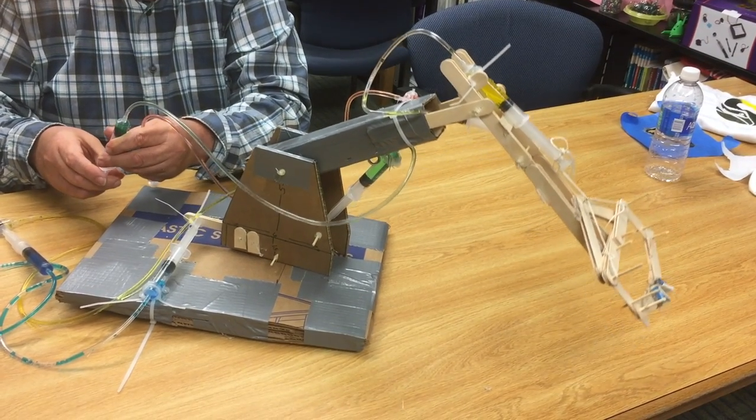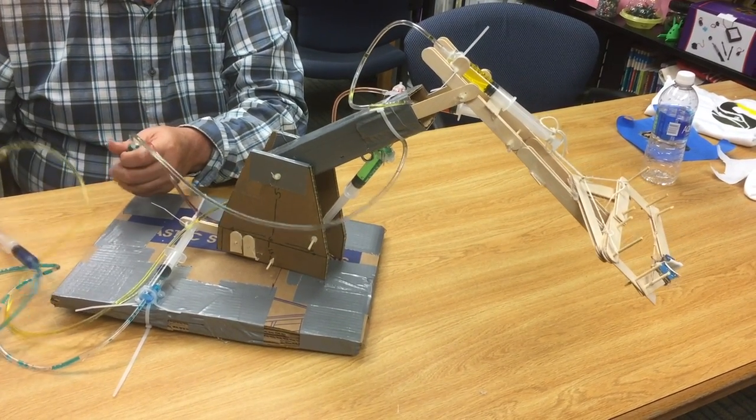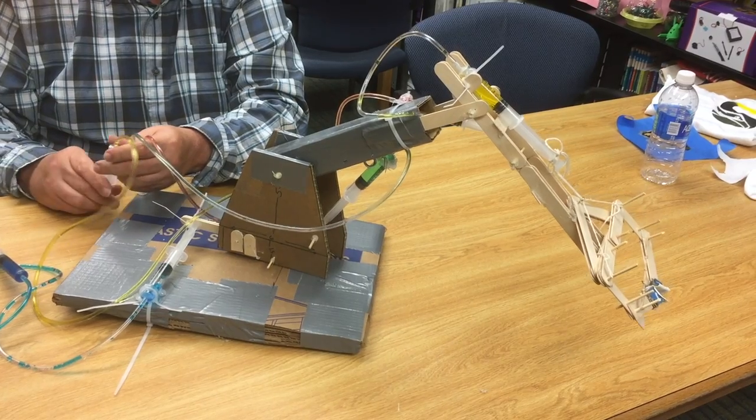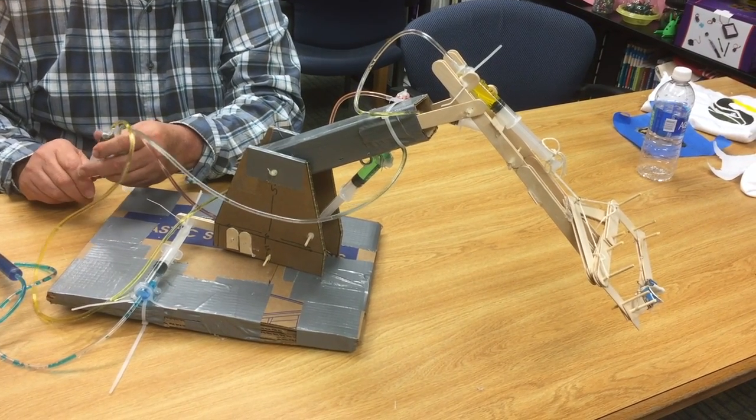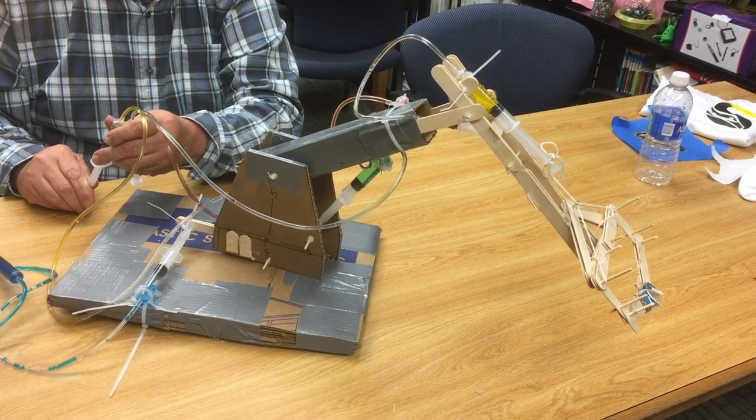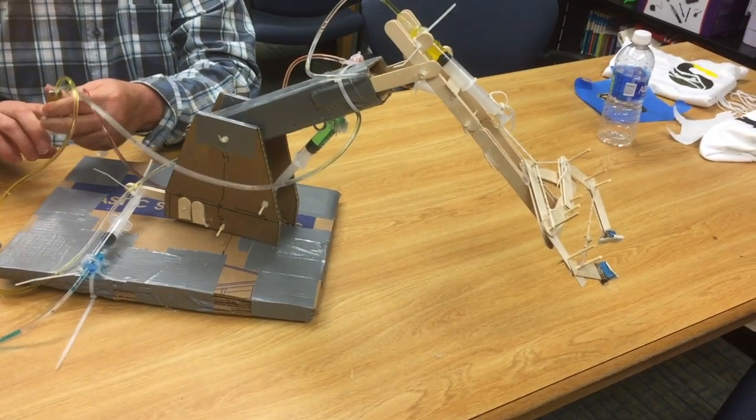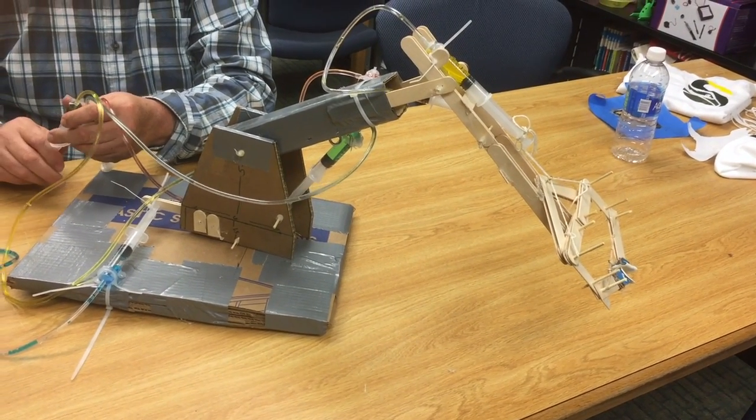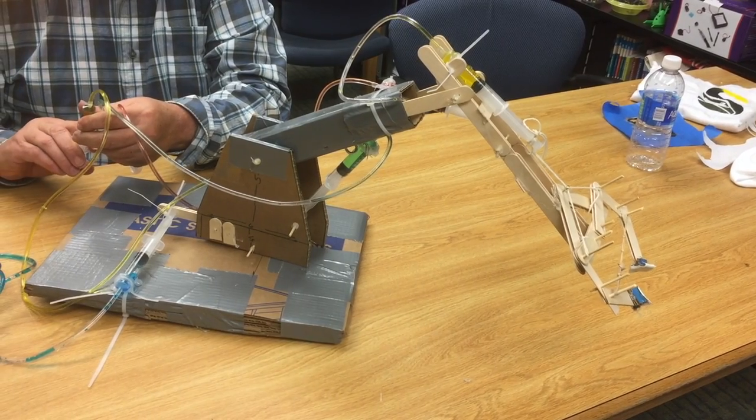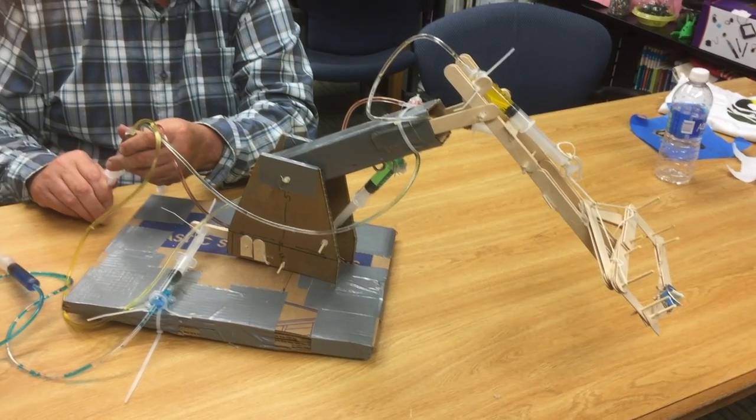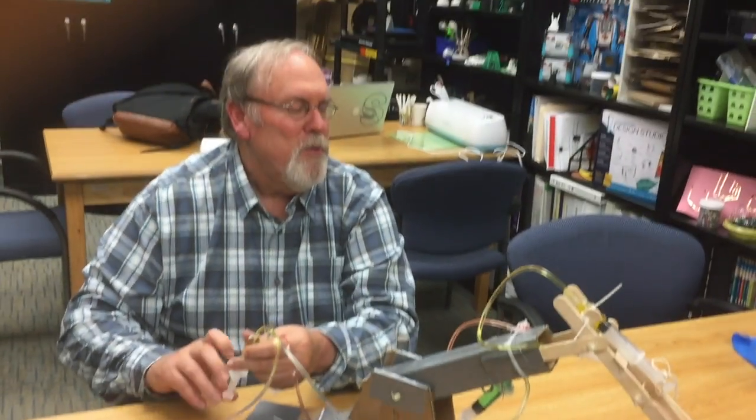We also have the ability to open and close the claw that's on the end. That claw is basically nothing but tongue depressors. The key there is we've used rubber bands to add tension to the claw so that it would automatically close with enough force that you might be able to pick something up with it.